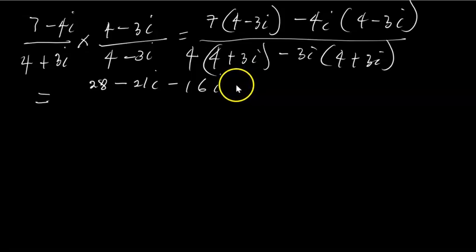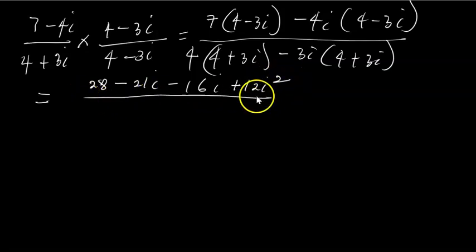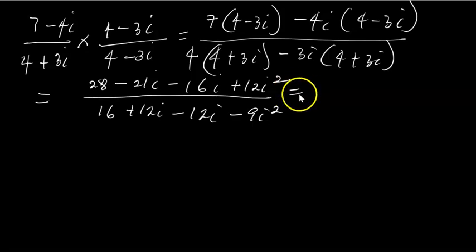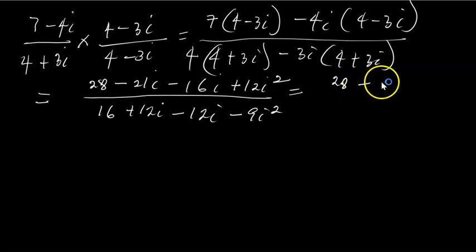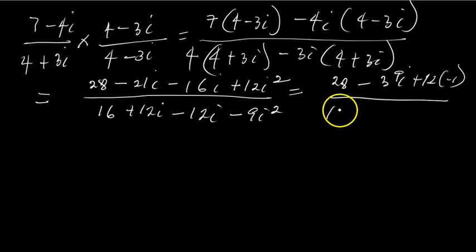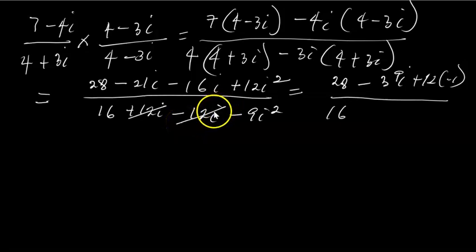Expanding, the numerator becomes: 7 × 4 = 28, minus 21i, minus 16i, minus 4i × (-3i) = +12i². The denominator becomes: 4 × 4 = 16, plus 12i, minus 12i, minus 9i². Collecting terms in the numerator: 28 - 37i + 12i². Remembering that i² = -1, I can replace i² with -1.